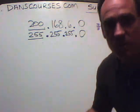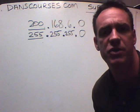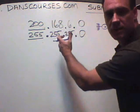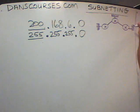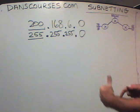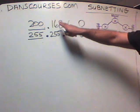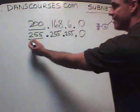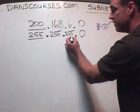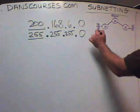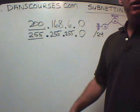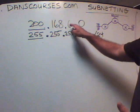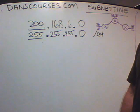We're going to take this network and subnet it into networks. We want to take the 200.168.6.0 network with a Class C netmask of 255.255.255.0 — also called a slash-24 netmask — and turn it into three networks.